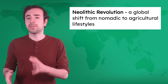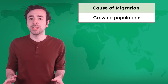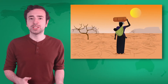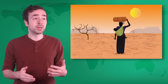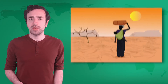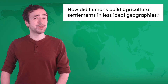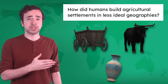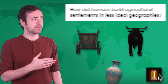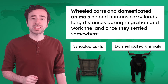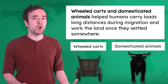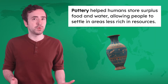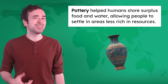The Neolithic Revolution started in West Asia around 10,000 years ago and spread as growing populations needed more land for agricultural settlements. But as people migrated away from geographic sweet spots, they found that the climate, soil, and waterways became more difficult to work with. Wheeled carts and domesticated animals helped humans carry loads long distances and work the land. Pottery helped humans store surplus food and water, allowing people to settle in areas less rich in resources.